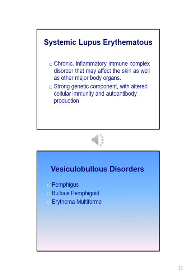Systemic lupus erythematosus is a chronic inflammatory immune complex disorder that may affect the skin as well as other major body organs. There is a strong genetic component with altered cellular immunity and autoantibody production.